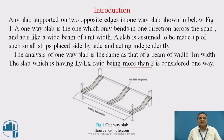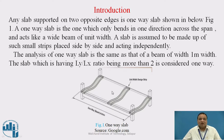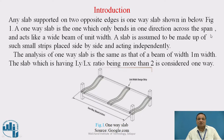Introduction: Any slab supported on two opposite edges is a one-way slab as shown below. Here it is shown that this is a one-way slab — it is supported on only two edges, one is this edge and another is this edge. That is, along two long edges parallel to each other it is supported, and this is the shorter span. A one-way slab bends in only one direction across the span — that means it will bend only in the shorter direction — and acts like a wide beam of unit width.